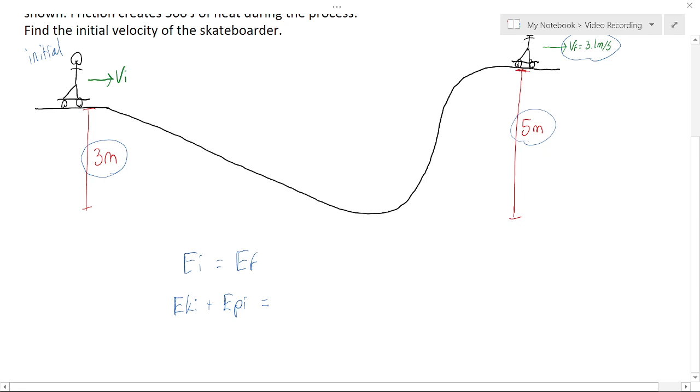Now at the end of the problem, we have some final kinetic energy because we're moving at 3.1 meters per second, and we're 5 meters high, so we have some potential final.